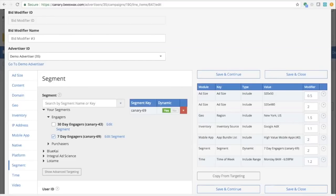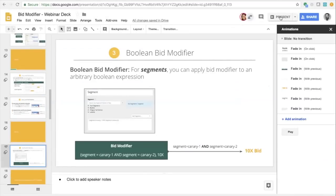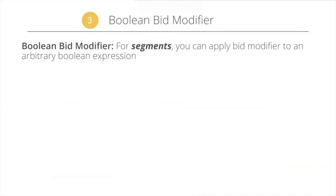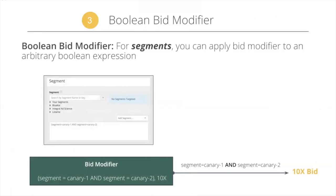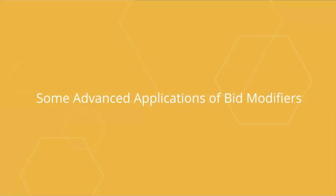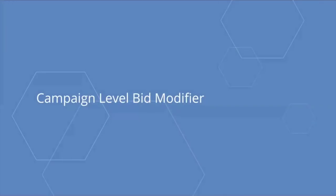The third type is the boolean bid modifier, applied on segments. Just as you can write an arbitrary boolean expression in targeting, you can do the same for bid modifiers. For example: when a user is in segment 'canary one' AND segment 'canary two,' apply a modifier of 10x. This arbitrary boolean expression using ANDs, ORs, and NOTs can be used on segments only, but given how flexible segments are on our platform, this provides significant flexibility in writing complex expressions.